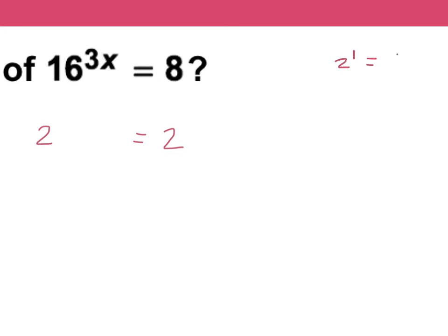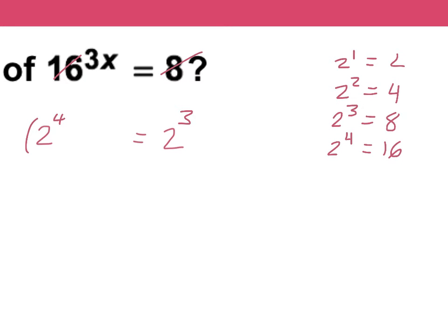We have 2 to the first power is 2, 2 to the second power is 4, 2 to the third power is 8. So we're going to switch out 8 for 2 to the third power. 2 to the fourth power is 16, so we're going to switch out this 16 for 2 to the fourth power. And then we still have this 3x that we need to keep there also. So I just changed both of these to have the same base.